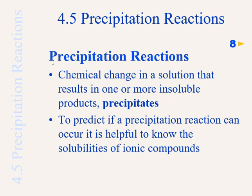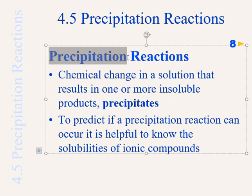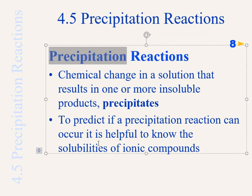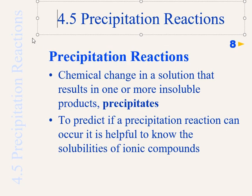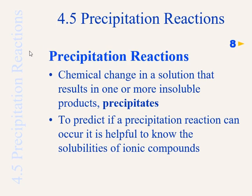One class of reactions is precipitation reactions. What exactly does the word precipitation mean? Normally when humidity reaches 100%, we say that precipitation will happen, meaning water will come down from the clouds in the form of rain. That's a precipitate.